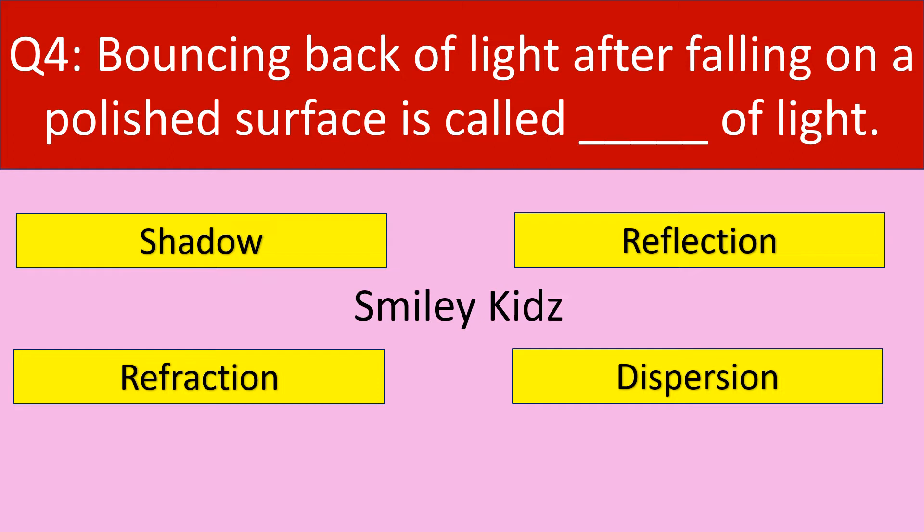Moving to question number 4. Bouncing back of light after falling on a polished surface is called dash of light. Your options are: Shadow, Reflection, Refraction, Dispersion.